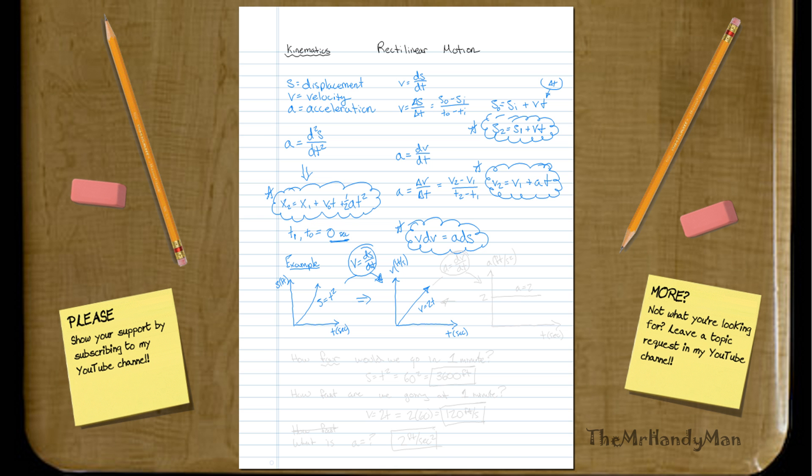And we can use the other relationship with acceleration, so A equals dv dt. Use this relationship. Once again, this would be acceleration, so that would be feet a second squared, and this would be second. Great. So and that would stay constant at 2. So A equals 2.